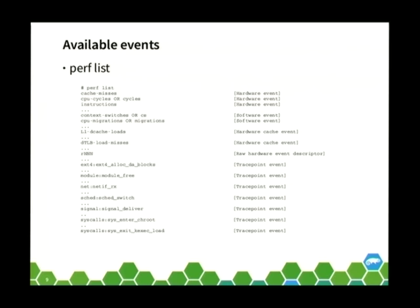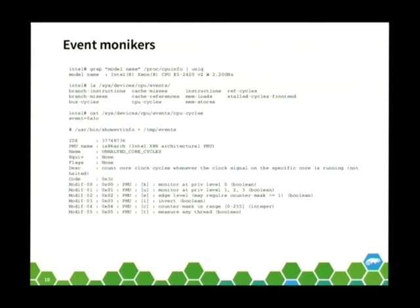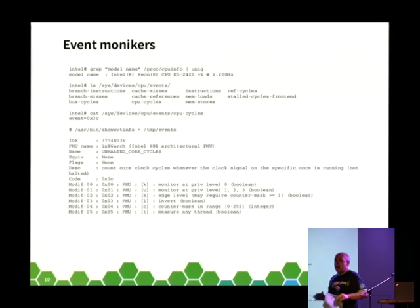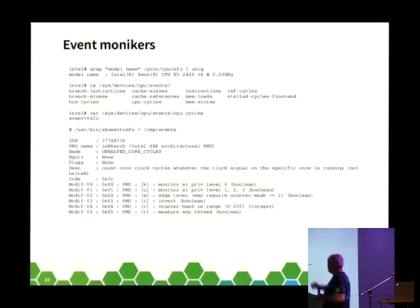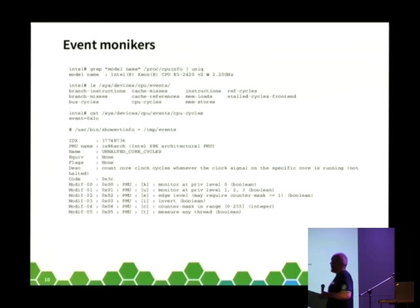Under hardware events we have cache-misses, CPU-cycles, and instructions — these are called event monikers, basically aliases for events. You won't find these in any Intel documentation; they were created to abstract event names so users don't have to know the underlying event type. On a Xeon E5, if I look in /sys/devices/cpu/events I'll find a file called 'cpu-cycles' matching that event moniker, which contains the value 0x3c.